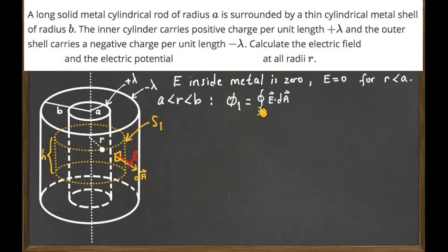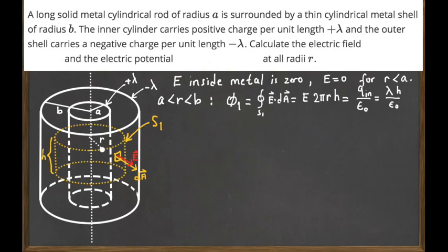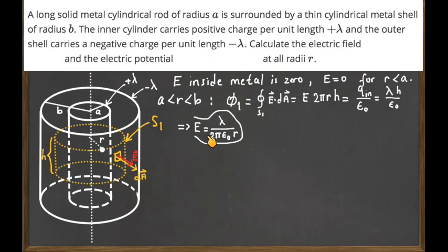The flux through the closed surface S1 only comes from the side area, because on the top and bottom surfaces the electric field and area vectors are perpendicular and contribute zero flux. So the flux is just the electric field strength times the side area: E times 2πrh. By Gauss's law this flux equals the charge inside divided by ε₀. Since the cylinder height is h, the enclosed charge is h·λ. Solving for E gives E = λ / (2πε₀r).